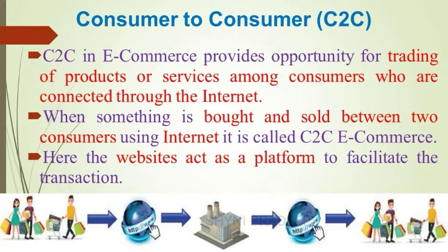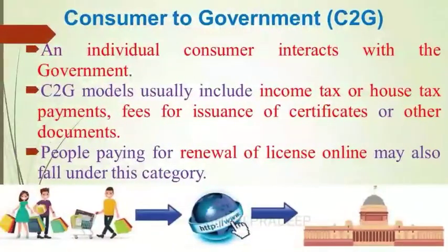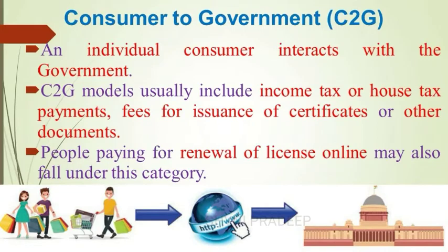The next category is consumer to government. Here, an individual consumer interacts with the government. Consumer to government models usually include income tax or house tax payments, fees for issuance of certificates or other documents. People paying for renewal of license online may also fall under this category.